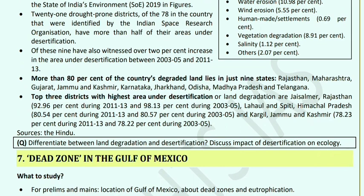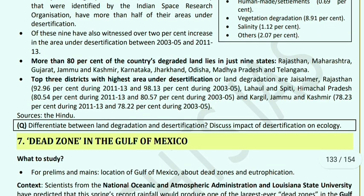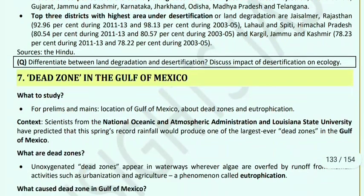80% of the most degraded land is in Rajasthan, Maharashtra, Gujarat, Jammu & Kashmir, Karnataka, Jharkhand, Odisha, Madhya Pradesh, and Telangana. The top three districts with the highest area under desertification are Jaisalmer (Rajasthan), Lahaul and Spiti (Himachal Pradesh), and Kargil (Jammu and Kashmir).